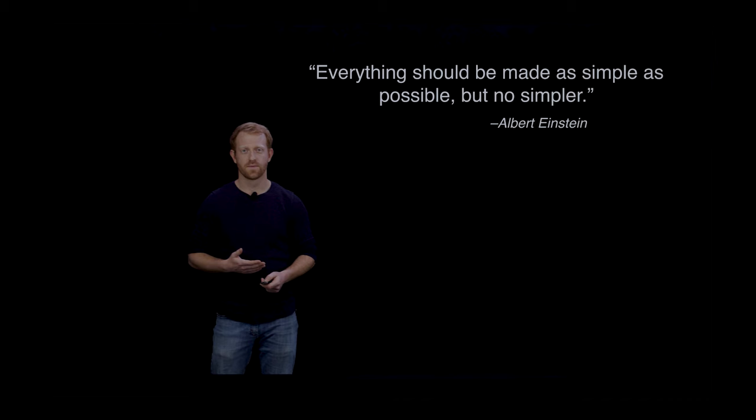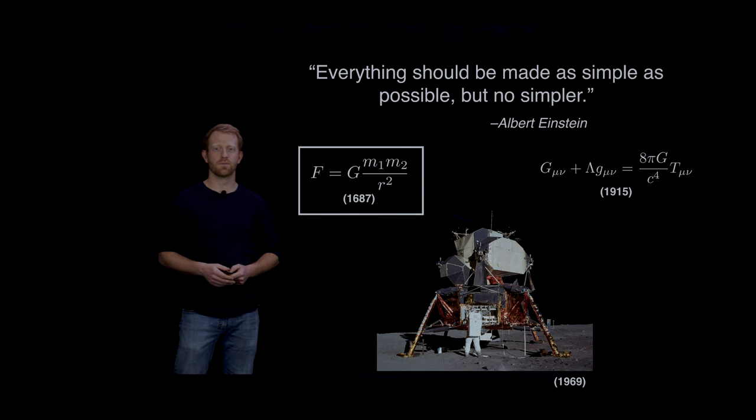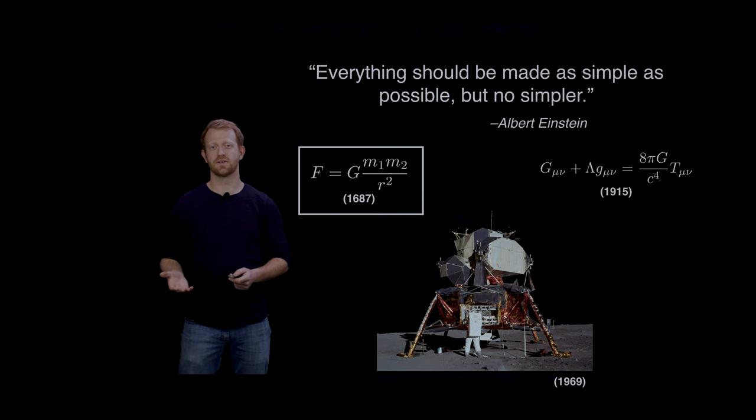One of Einstein's great contributions was the theory of general relativity which first told us that Newtonian gravity was not the full picture. But more than 50 years after we knew that, we landed on the moon without accounting for relativistic effects. Newton's law was simpler and it worked for what we needed, and it really wasn't until we started doing things like GPS that we had to start accounting for Einstein's theory.